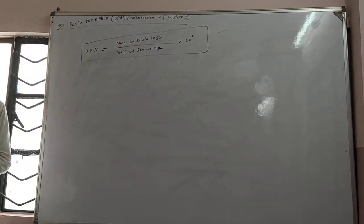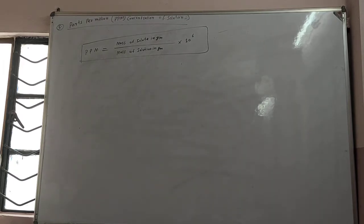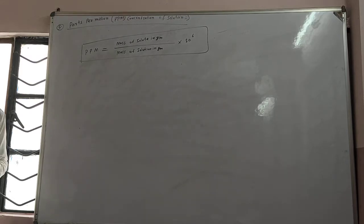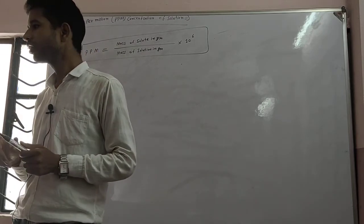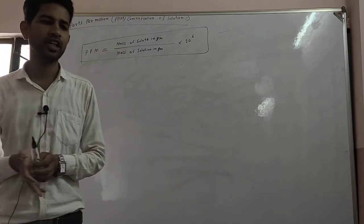Here, 10 to the power 6 means 1 million — 10 lakh. PPM is a very small unit. The number of parts of the solute present in 1 million parts of the solution is called its PPM concentration.